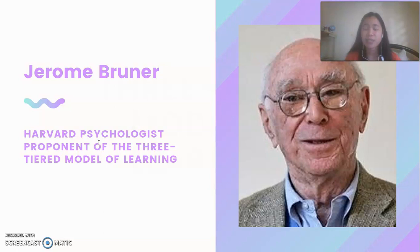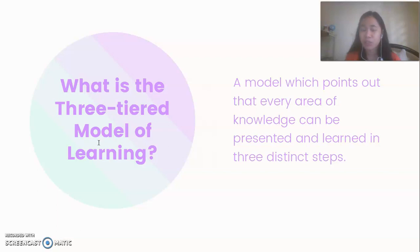Jerome Bruner is the proponent for the three-tiered model of learning. Jerome Bruner is a Harvard psychologist. What is this three-tiered model of learning all about? This model points out that every area of knowledge can be presented and learned in three distinct steps.